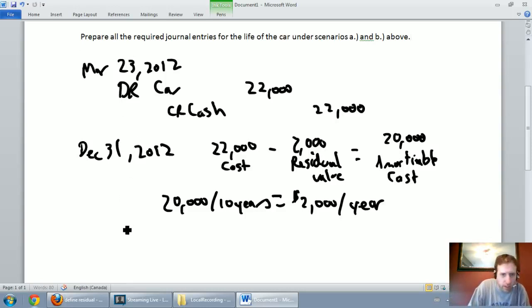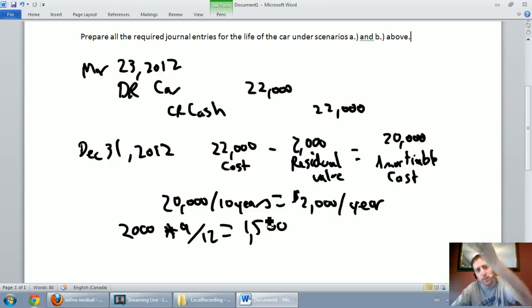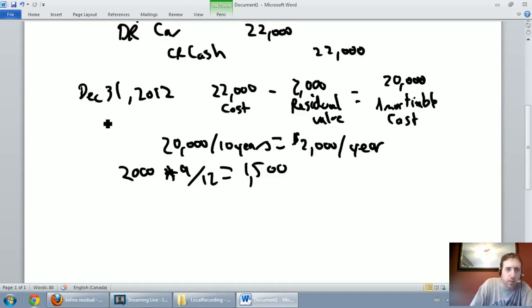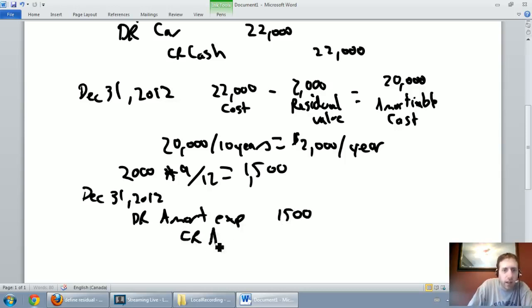So we have this $2,000 asset. We want to amortize it for nine of the 12 months of the year, 2,000 times 9/12, I can even do this one in my head is $1,500. So our amortization for fiscal 2012, our amortization for the nine months between when I bought the car and my fiscal year end is $1,500 but I got to do journal entries. So I've dated already, maybe I'll date it again just to remind myself it's December 31st, 2012. I'm going to debit amortization expense $1,500 and I'm going to credit accumulated amortization and there's a very good chance your prof will make you write it out. Accumulated amortization or accumulated depreciation on the car and again that's $1,500.